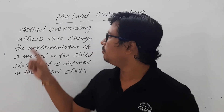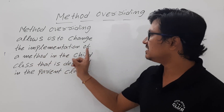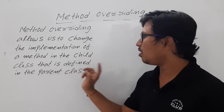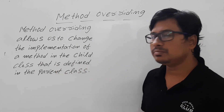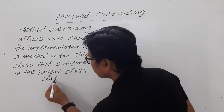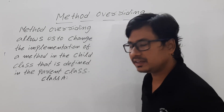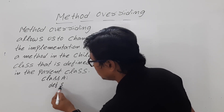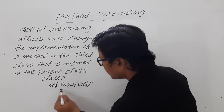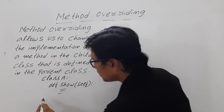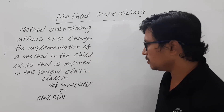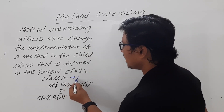Method overriding allows us to change the implementation of a method in the child class that is already defined in the parent class. Suppose you have a class A, inside class A you have a method called 'show' with some arguments and some statements. Now class B is inheriting class A, so class A is called the parent class.